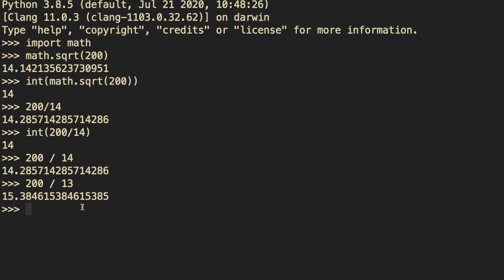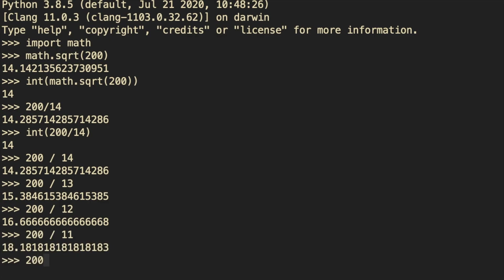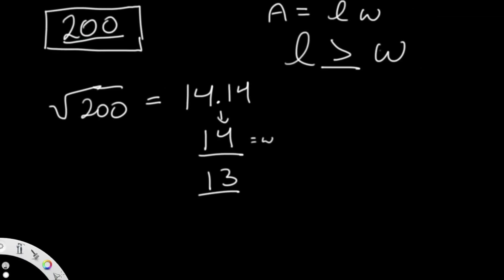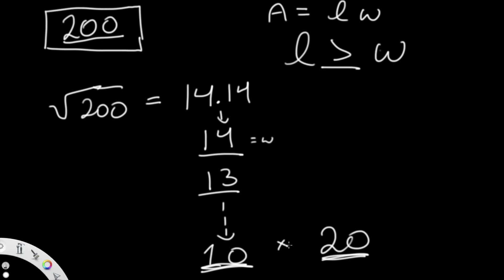We keep decreasing by 1 until we finally find a number that gives an integer result. We reach 10: 200 ÷ 10 = 20, which is an integer. So 10 and 20 are our two parameters — when you multiply 10 × 20 you get 200, and this is the best value satisfying all conditions with the length and width closest to each other.